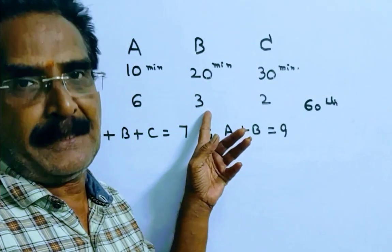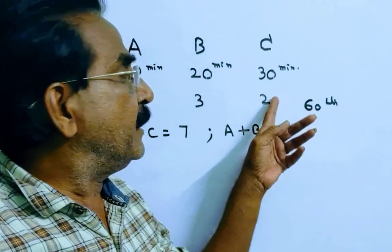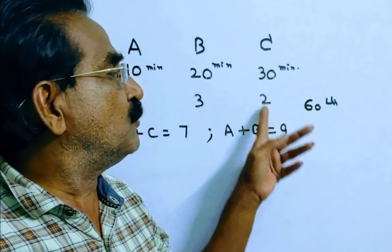Pipe B fills 3 liters per minute, that's 60 divided by 20. And pipe C can empty 2 liters per minute, that's 60 divided by 30.